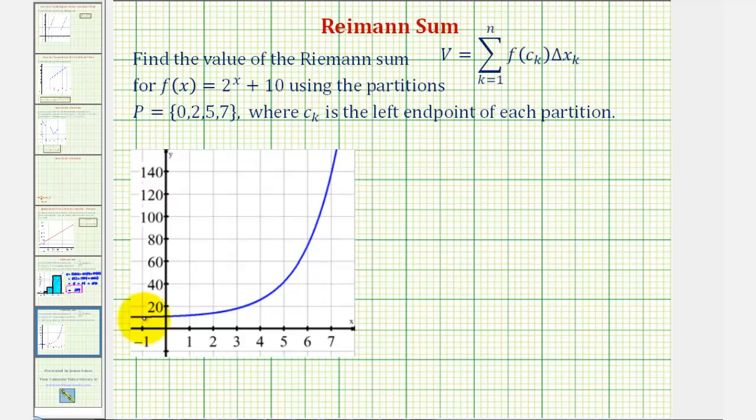So because our function is non-negative over this interval, we can think of this Riemann sum as summing the area of rectangles to approximate the area under the curve, where f(c) times Δx would give us area of a rectangle, where f(c) would be the height of the rectangle and Δx would be the width of the rectangle.